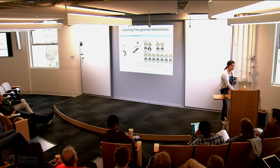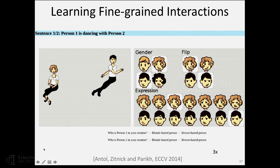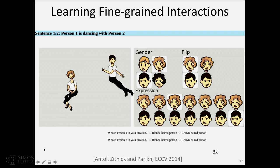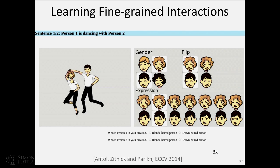A third setup where we explored controlling data density was for learning what it looks like for two people to interact with each other. We gave Mechanical Turk workers an interface where they can pick poses, genders, and hair colors, and asked them to show us what it looks like for a person dancing with another person. We then repeated this asking 50 different people to show us dancing, walking, holding hands, arguing, and talking — getting multiple visual interpretations of each interaction concept.